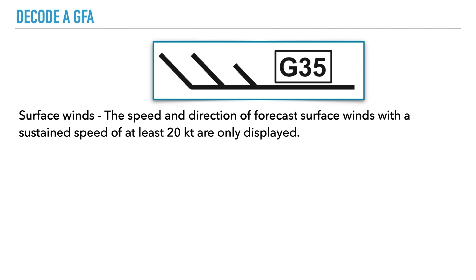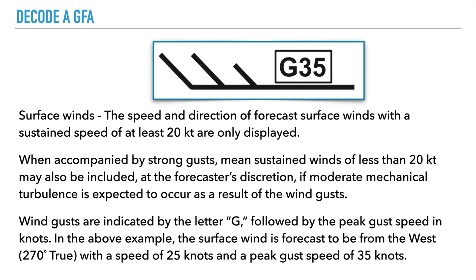The next section is surface winds. The speed and direction of forecast winds are depicted when they have a sustained speed of at least 20 knots. Wind gusts are indicated by the letter G followed by the peak gust speed in knots. In the above example, surface winds are forecast to be from the west — 270 degrees true — with a speed of 25 knots gusting to 35 knots.